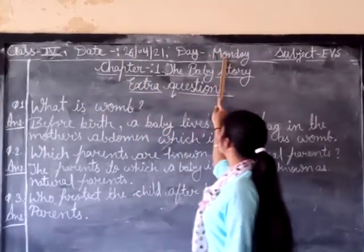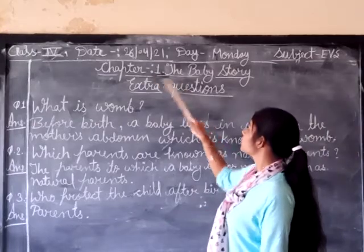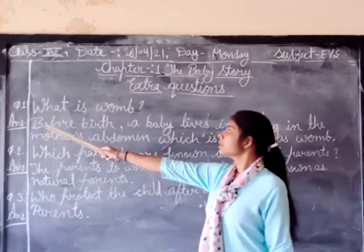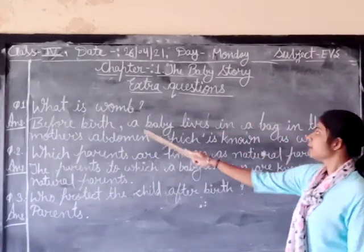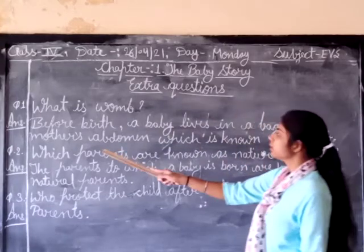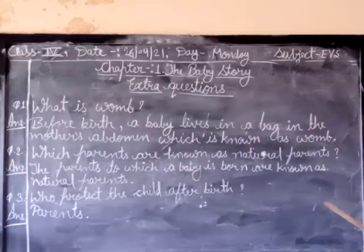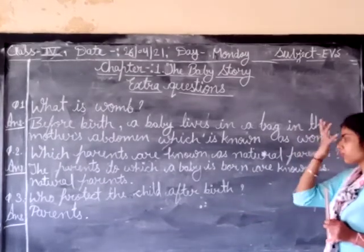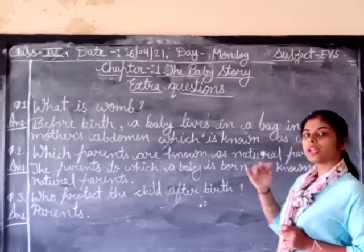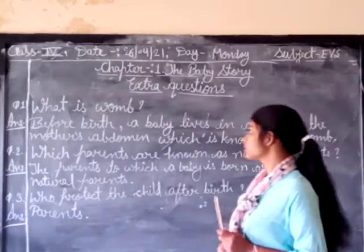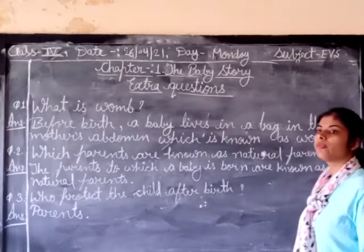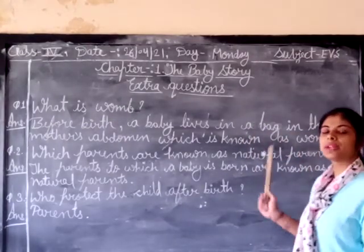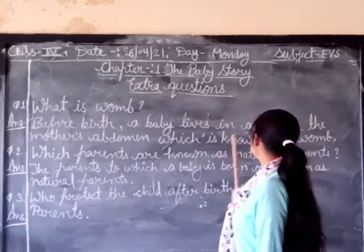First of all, what is womb? Before birth, a baby lives in the mother's abdomen. The mother's abdomen is the stomach area. The baby lives there and it is known as the womb. The child is in the womb — it consists of the womb.